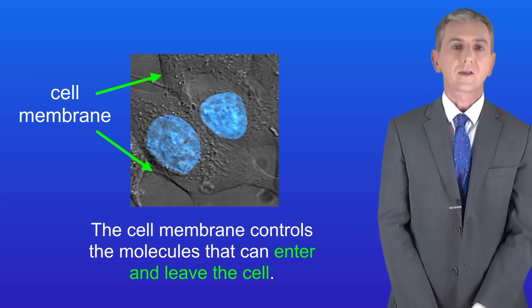Now inside the cell we've got a number of smaller structures and you need to know about two of them. These are the mitochondria and the ribosomes. So let's look at those now.